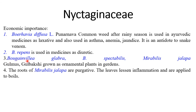Some ornamental plants include Bougainvillea glabra and Bougainvillea spectabilis — these two are species of Bougainvillea, called Bougainville in Marathi. Mirabilis jalapa is called the 4 o'clock plant in English, or Gulbakshi in Hindi, and is grown in gardens as an ornamental plant. Mirabilis jalapa is also used as a purgative; the leaves lessen inflammation and are applied on boils. These are some of the economic importances of family Nyctaginaceae.